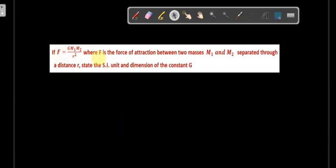Another application of dimension is to find the unit and dimension of a constant. To explain with this example, if F is equal to G m1 m2 over r squared, where F is the force of attraction between two masses m1 and m2 separated through a distance r, state the SI unit and dimension of the constant G.